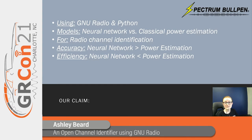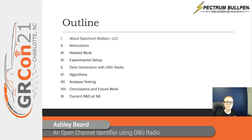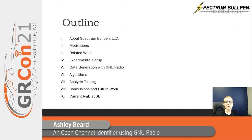This presentation will dive deeper into the motivation, the process, and the analysis of this endeavor. I'll first go over Spectrum Bullpen and what we do, then share the motivation behind this project with background on neural networks and cognitive radio. Next we'll cover the experimental setup using GNU Radio, the analyses on algorithm results, and finally a preview of Spectrum Bullpen's current projects, one of which also relies heavily on GNU Radio and its Python interpreter.